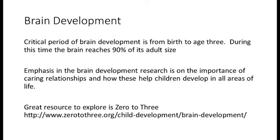Module 1 discussed the importance of brain development in the early years, including information about the critical age of birth to age 3, when the brain reaches 90% of its adult size. While Module 1 focused on the area of cognitive development, much of the emphasis in the brain development research is on the importance of caring relationships and how these help children develop in all areas of life.